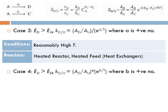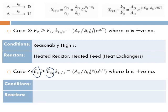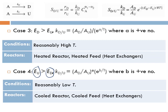Case 4: If the activation energy of the undesired reaction E_U is higher than E_D for the desired reaction, then k_U is more sensitive to temperature than k_D. Both k_D and k_U increase with temperature, but k_U increases more — so it is not beneficial to increase temperature. Instead, maintain reasonably low temperature, but not too low, because very low temperature gives a very slow reaction rate and no appreciable conversion. Use cooled reactors or introduce feed at lower temperatures.